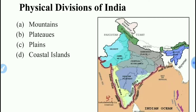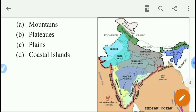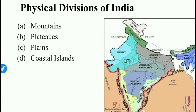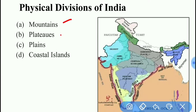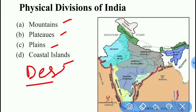India can broadly be divided into four physical divisions: mountains, plateaus, plains, and coastal islands. There can be many more things you will be learning in higher classes, like desert and many others. So now I will start discussing each in detail.